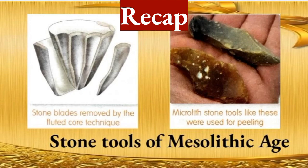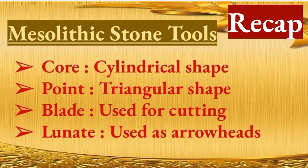In Learning Plan 2, we studied about Mesolithic Age tools. Two pictures are here: one showing stone blades removed by the fluted core technique, and the second showing microlith stone tools used for peeling. Micro means small and lith means stone, so microlith means small stone tools. The tools of the Mesolithic Age include the core in cylindrical shape, the point in triangular shape, the blade used for cutting, and the lunate used as arrowheads.